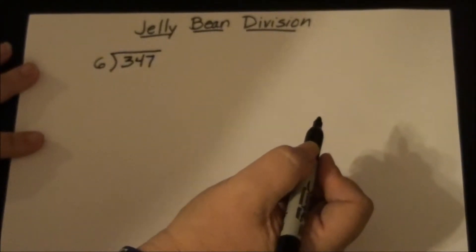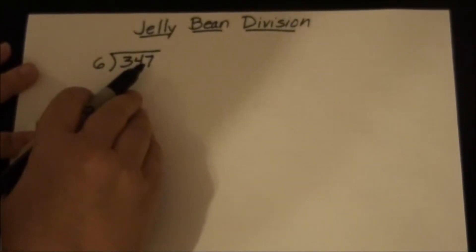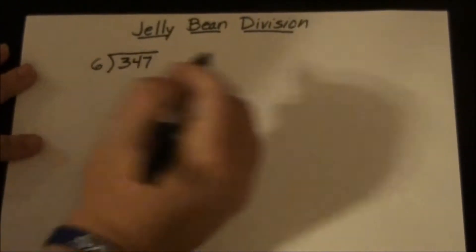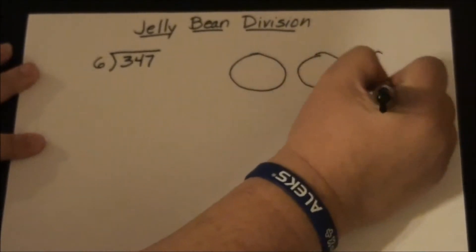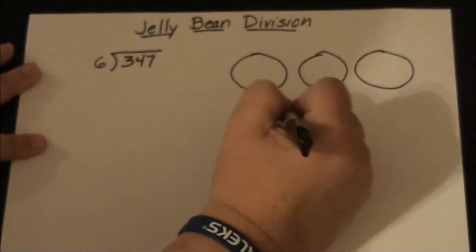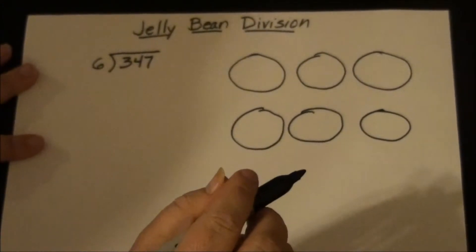So we call this Jelly Bean Division because there are going to be six people sharing 347 jelly beans. So what we're going to do first is draw a bowl for each of those six people. Now we are not going to do one for me, one for you, one for me, one for you 347 times, so don't panic.